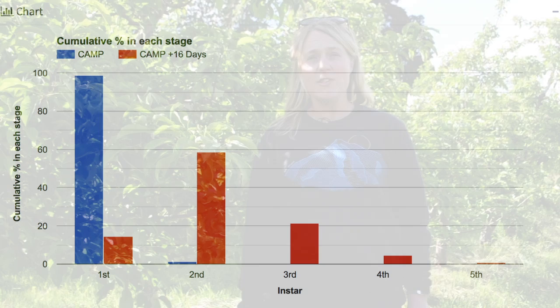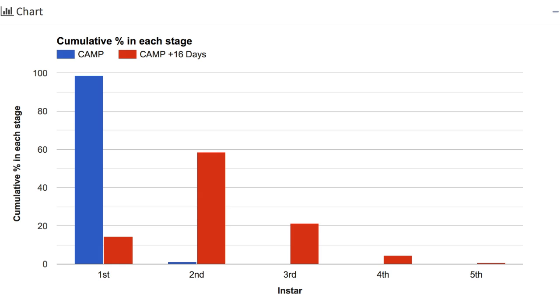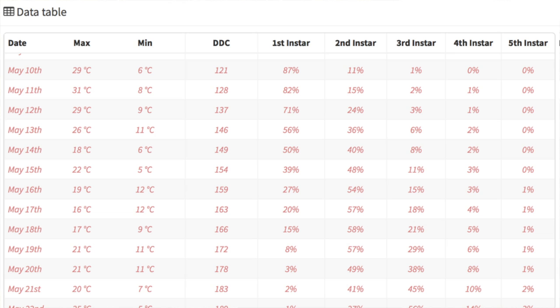Campylooma has five instars of nymphs. The DAS will show you on its models and charts the number and percentage of campylooma in each of the different instars as it relates to degree days in the development of the pest. You can use DAS to time your spray for approximately the third instar nymph, which will also correspond with approximately the petal fall timing in the orchard.